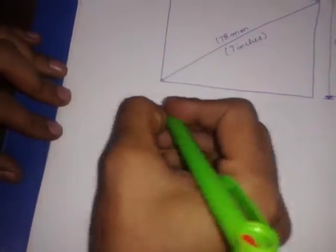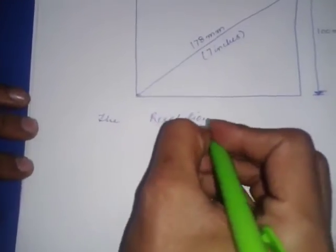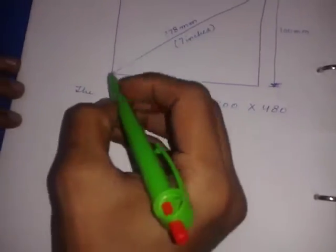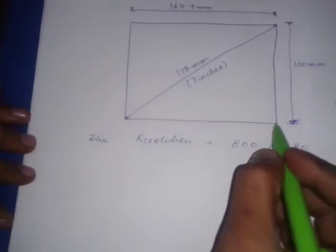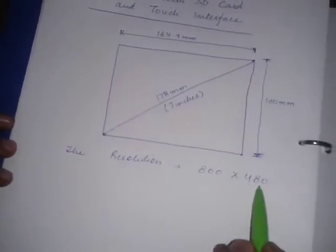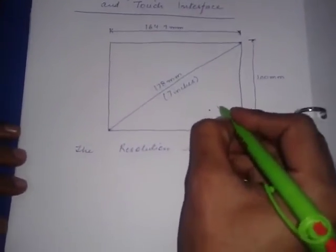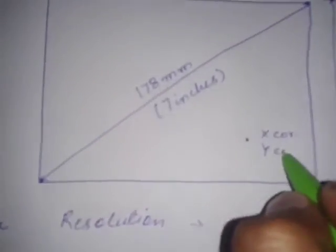The resolution of this LCD is 800 by 480. That means horizontally it has 800 points — from this point to this point there are 800 points in between. And vertically it has 480 points. Suppose you have to glow a particular point, then you have to know its x-coordinates as well as y-coordinates.